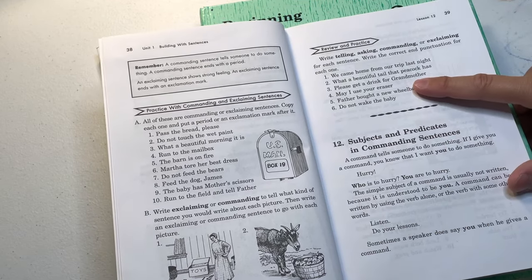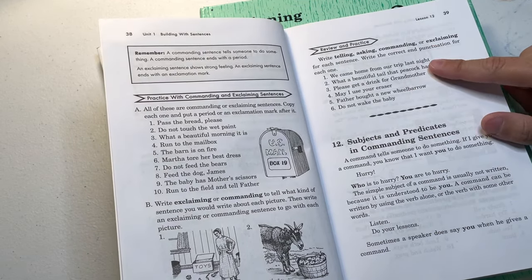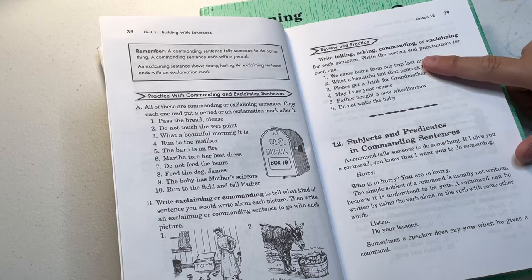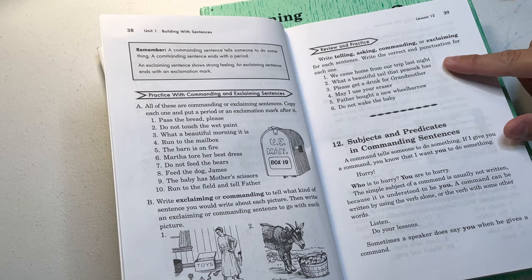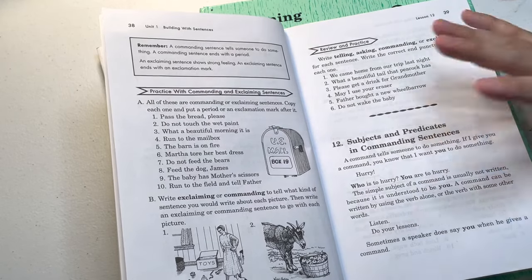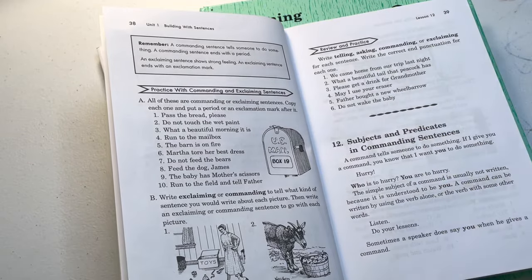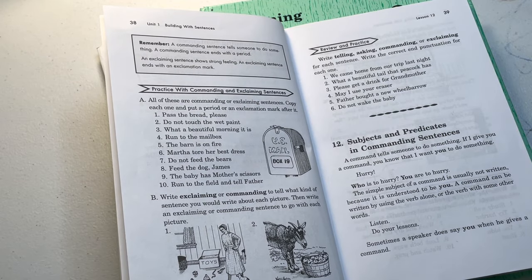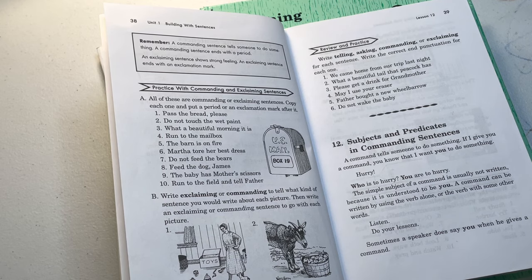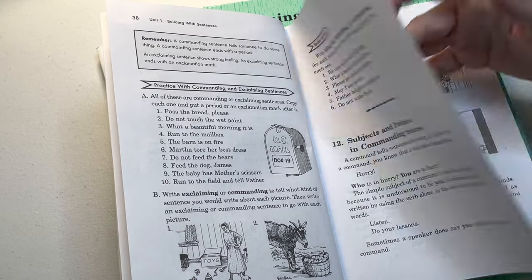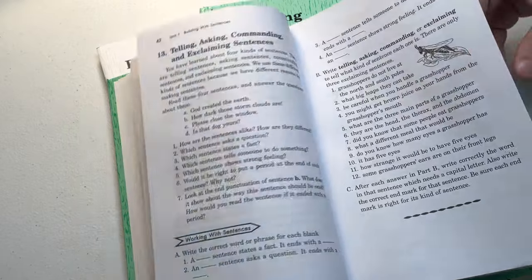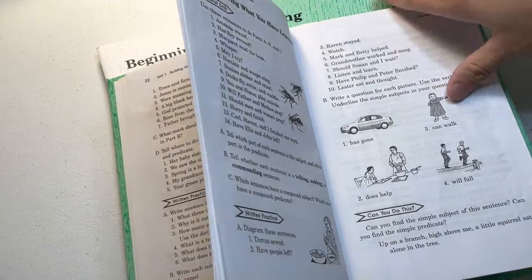I guess this is going to be a little bit of review. So maybe it's not mastery. Maybe it's a little bit of spiral. Write telling, asking, commanding, or exclaiming for each sentence. Write the correct end punctuation for each one. I don't know if this is spiral or mastery. But you're in one unit right now. You're in unit one. So they do a really good job at just really going deep into it. Subjects and predicates and commanding sentences. It's just more review. Reviewing what you have learned.